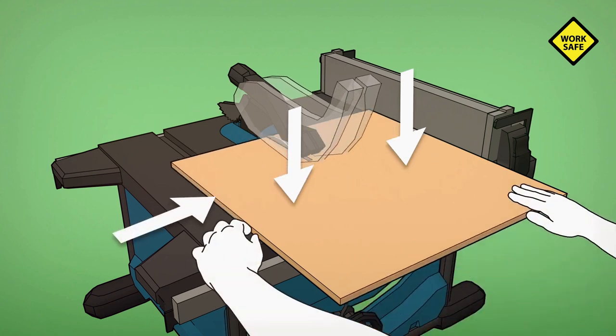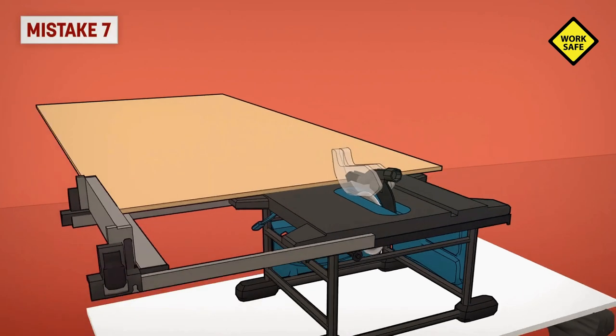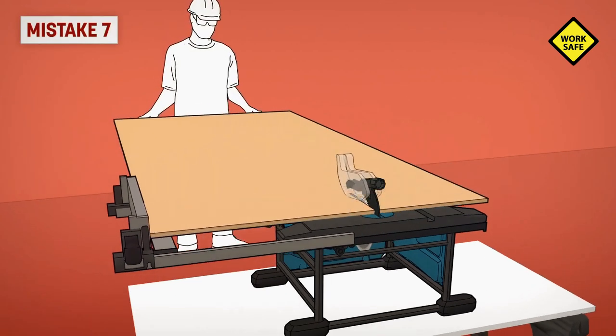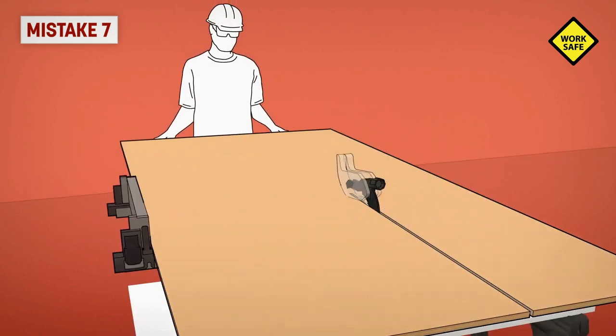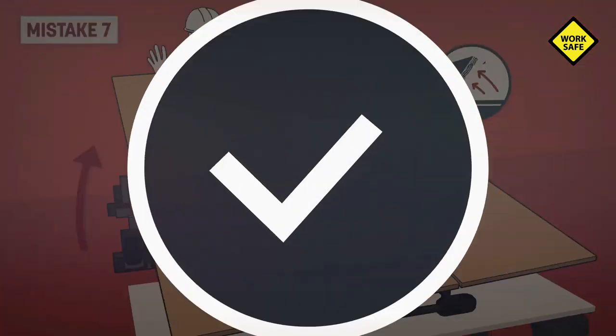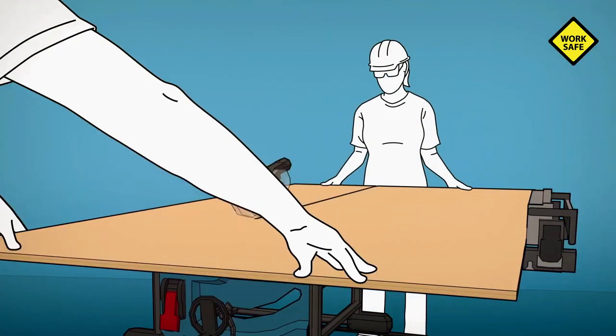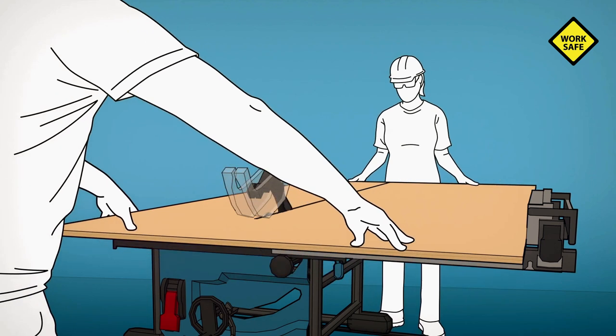Mistake seven: cutting large panels without supporting them. If you accidentally lift the panel, the blade's teeth can throw it back at you. The back and the sides of the panel need to be supported so that you can keep the workpiece flat and firmly pressed against the table.